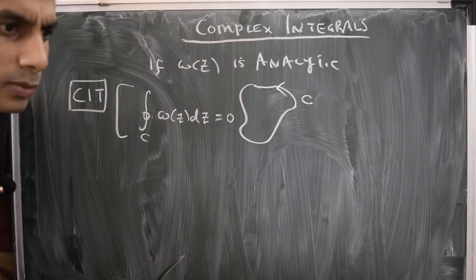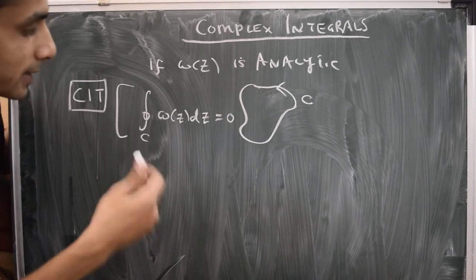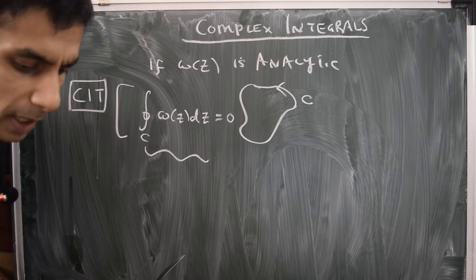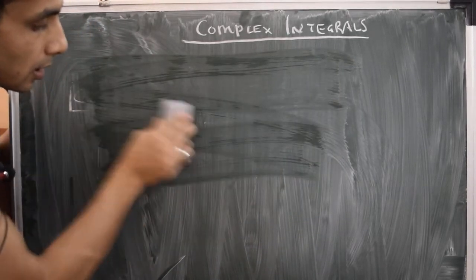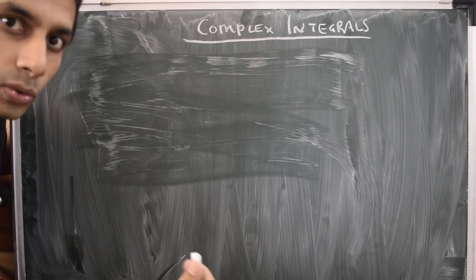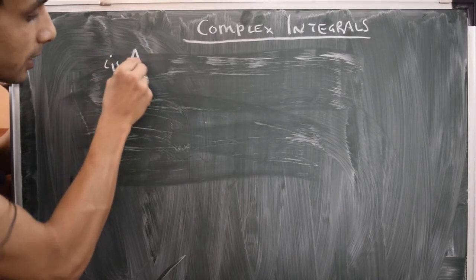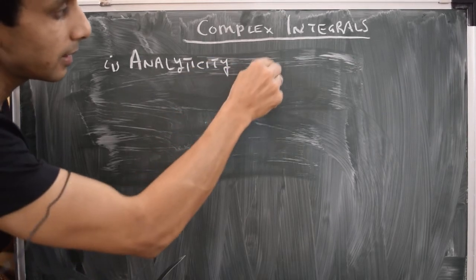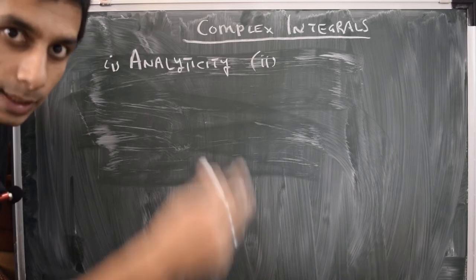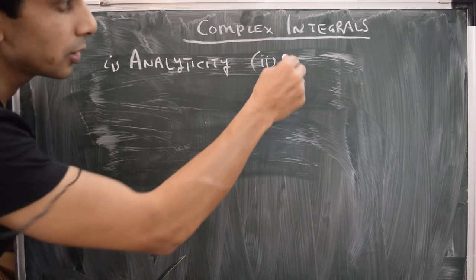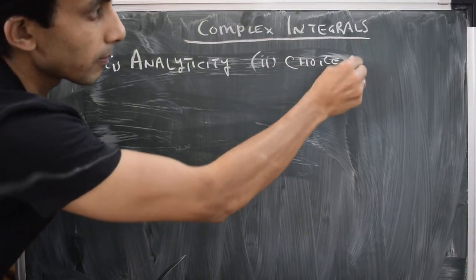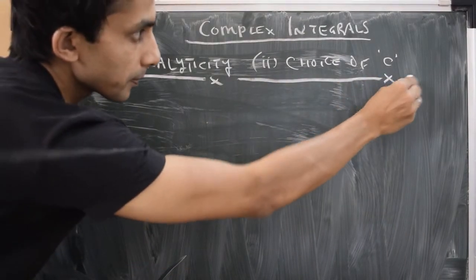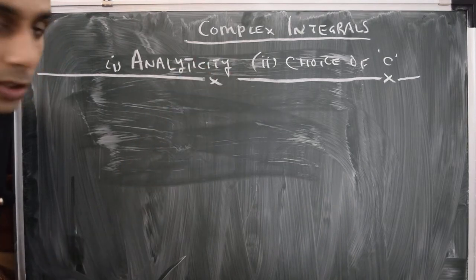In this video, let's work with some simple examples to explicitly see how one can evaluate this contour integral. Through explicit evaluation, we want to understand two things better: first, the role of analyticity, especially in the context of Cauchy's integral theorem; and second, the role that the choice of contour c plays in the final result.